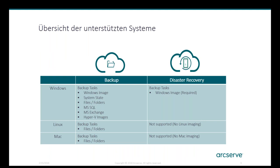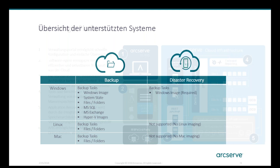Hier nochmal eine Übersicht, welche Funktionalität wir für welche Systeme supporten. Auf der Backup-as-a-Service-Seite unterstützen wir Windows-Image, System-State sowie Files und Folders, SQL Server, Exchange Server und Hyper-V-Images. Wenn Sie Disaster Recovery möchten, ist ein komplettes System-Image notwendig. Für Linux und Mac unterstützen wir Files und Folders; Disaster Recovery ist dort noch nicht verfügbar.